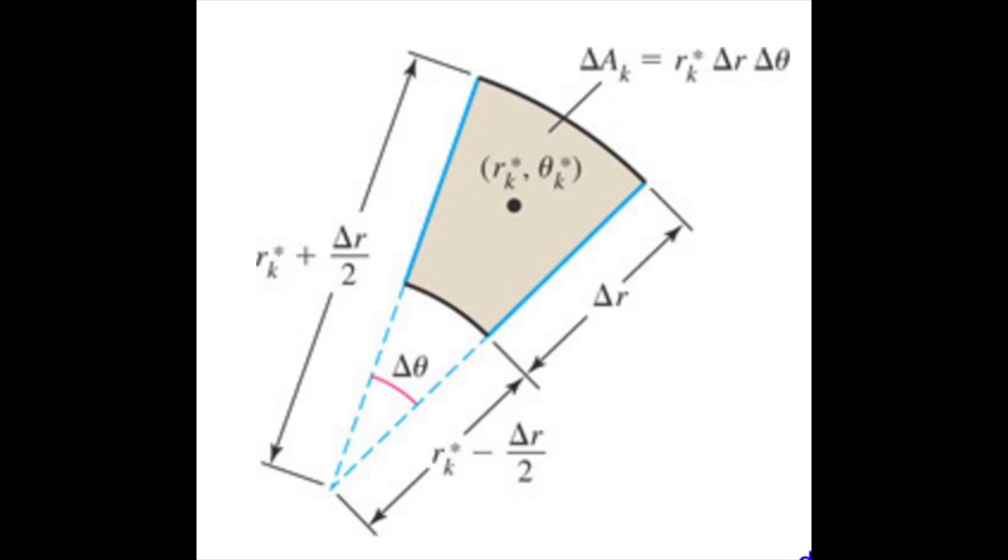As we learn from basic geometry, the area of a section of a circle equals one-half theta r squared. So to find the infinitesimally small change in the area, or dA, we will find that it will actually be r dr dθ.